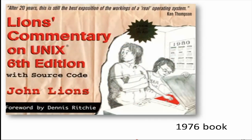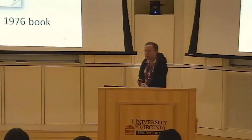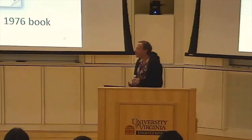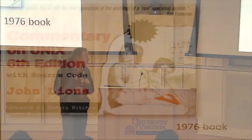So universities had access to the source code and lots of people started using Unix. There was a famous book that John Lyons wrote that basically walked you through the source code — you can still get this online today. There's a graduate OS course at MIT that basically still uses a variant of this. Unix was spreading and C was spreading mostly because of this availability through the 70s.